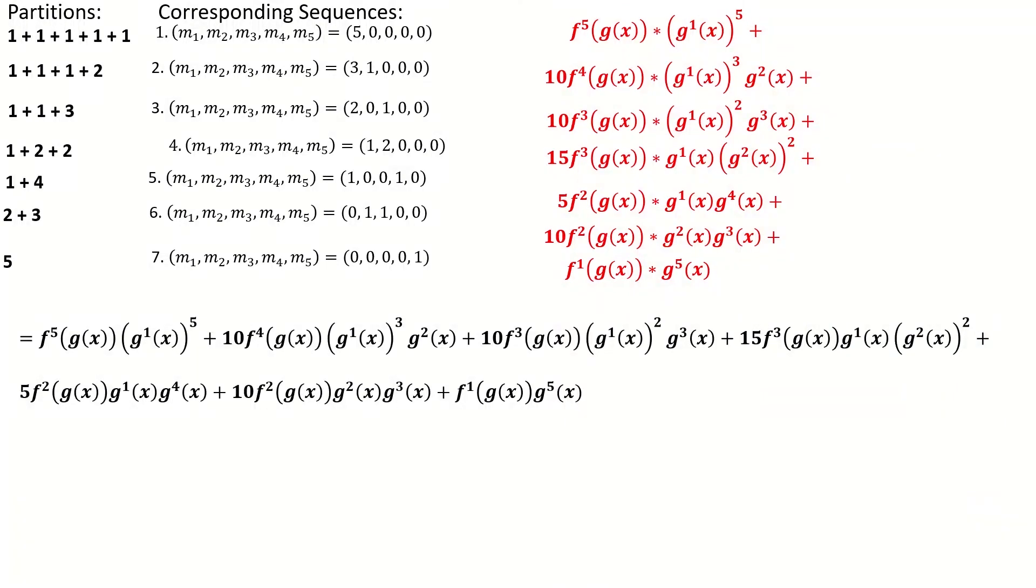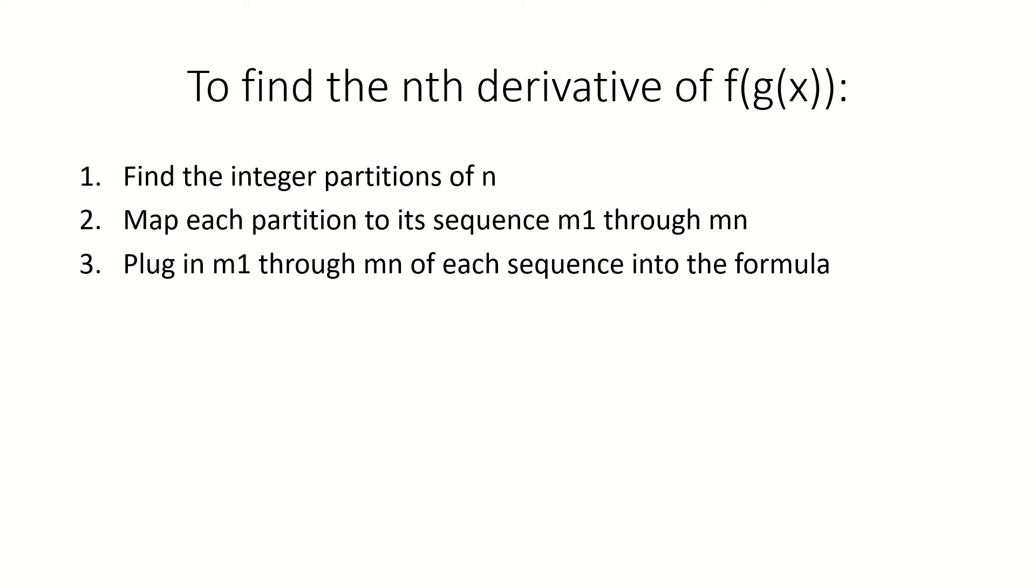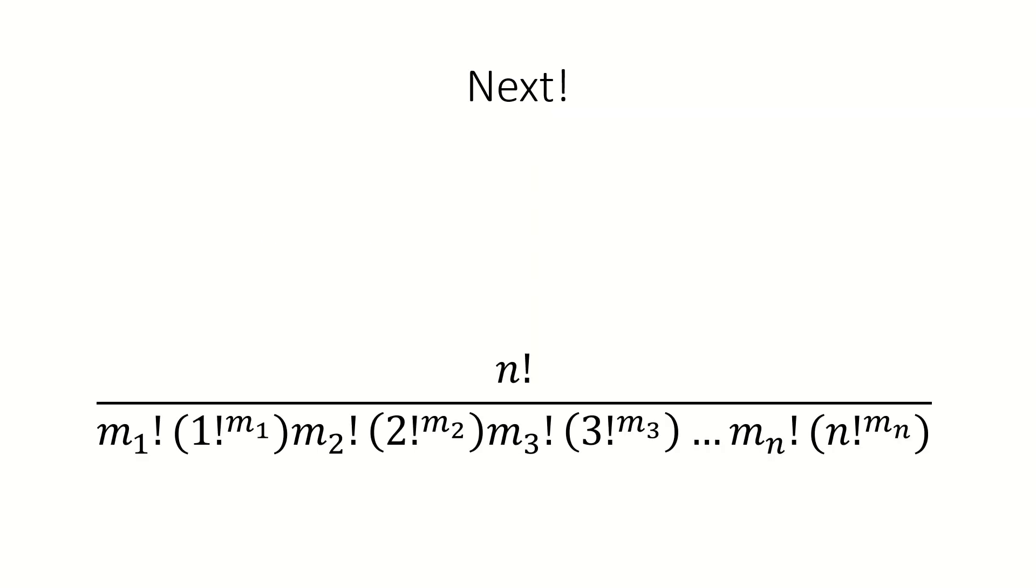So again, to find the nth derivative of f of g of x, find the integer partitions of n, map them to their sequences of numbers m1 through mn, and sum over each sequence of m1 through mn. Remembering that the exponents next to the functions are derivative exponents, and the exponents outside the parentheses are true exponents. The purpose of this video was to show you how to use Faa di Bruno's formula.